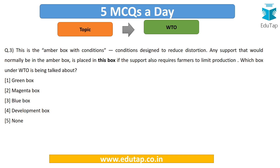Moving on — which box is described as the amber box with conditions, where conditions are designed to reduce distortion? Any support that would normally be in the amber box is placed in this box, and the support also requires farmers to limit production. Which box under WTO is being talked about — the green box, magenta box, blue box, the development box, or none of these?